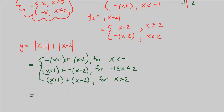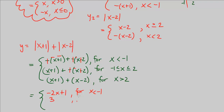Now let's simplify each piece. For x less than negative 1, distributing gives us negative 2x plus 1. In between negative 1 and 2, the x and negative x cancel out, leaving us with just 3. And for x greater than 2, it simplifies to 2x minus 1. So y is now a clean piecewise function with three linear pieces.